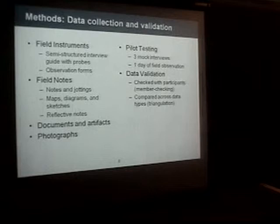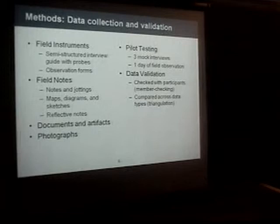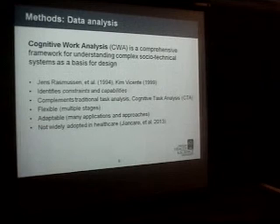Validation was done through member checking — sitting down with participants with notes and diagrams and asking, 'Did I get this right? Is this how things really work in your clinic?' Triangulation means looking across all data types to see if something was misunderstood or unclear. Conflicting responses between participants did happen frequently — an MA had one perception of how something happened, and medical records staff thought it happened very differently.